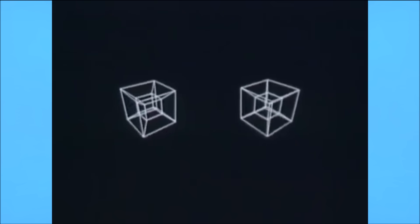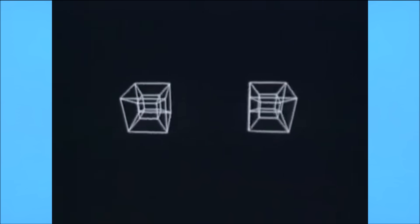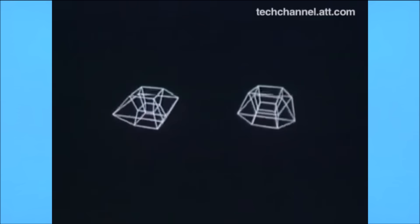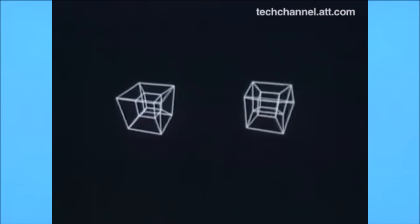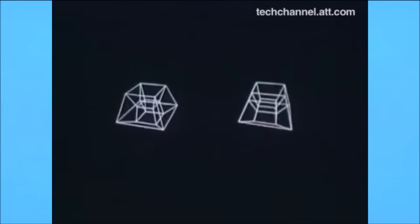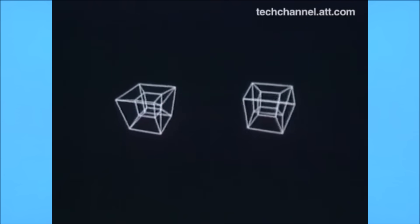Now the tesseract looks weird enough sitting still, but watch what happens the moment you start rotating it. I'll give you a moment to clean up your mind, which is most likely at this point exploded. Yes, that's what the shadow of a 4D cube looks like when the cube rotates.